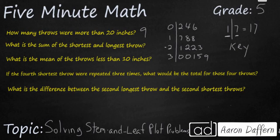What is the sum of the shortest and longest throw? Well your shortest throw is right here. That 0, 2, that's simply going to be a 2, and that 3 and that 9, that's going to be 39. So 2 plus 39, that's going to get us 41 inches.